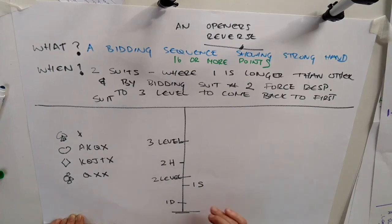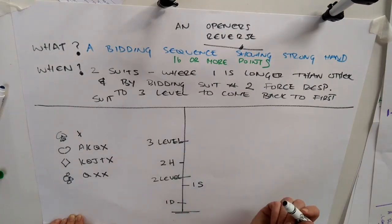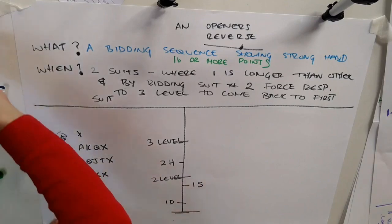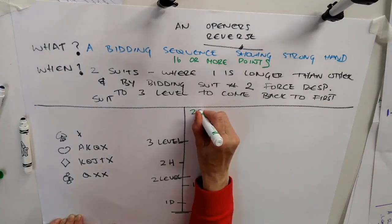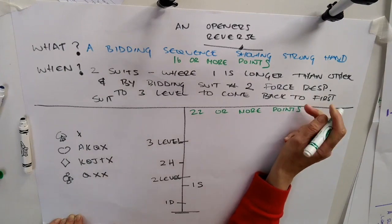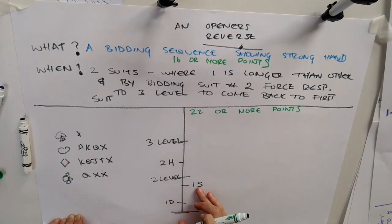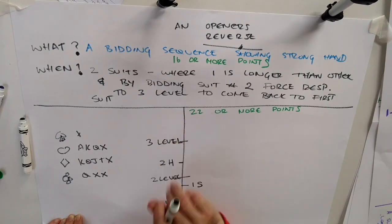six points, if they have to return to this original diamond bid, which they would have to do at the three level, they'd probably be okay. To go to the three level, you normally need about 22 or more points. So this Opener here knows that when they bid two hearts, even if this partner only has six points and a really rubbish hand, they'll probably be okay at the three level if they return to the three diamonds.